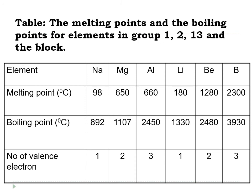This table shows that the melting points and boiling points for the elements in Group 1, 2, and 13 increase gradually and steadily from sodium to magnesium to aluminium, because the valence electrons are 1, 2, and 3 respectively. Similarly, for lithium, beryllium, and boron, their melting points and boiling points are also gradually increased.